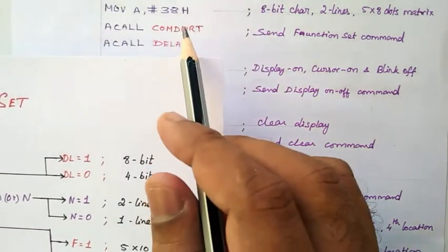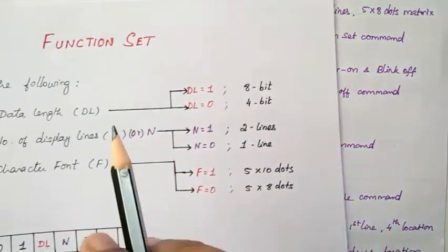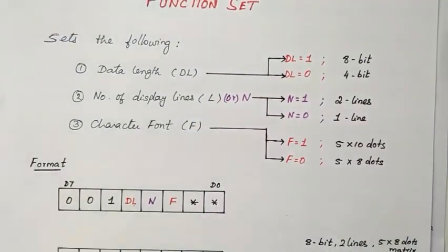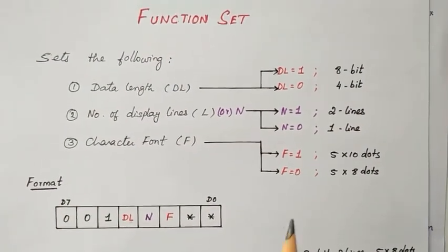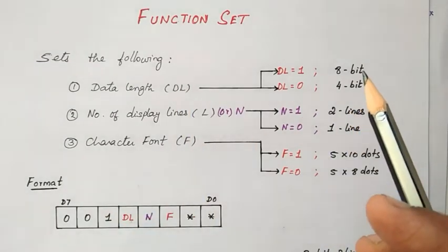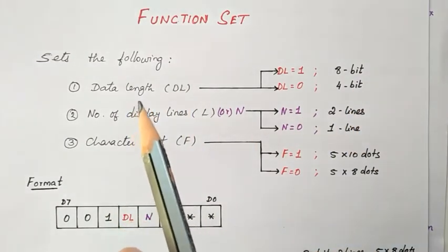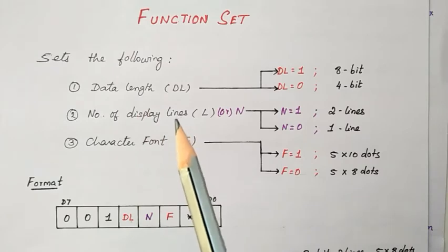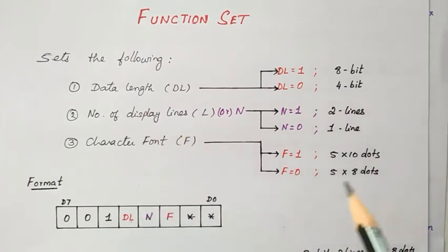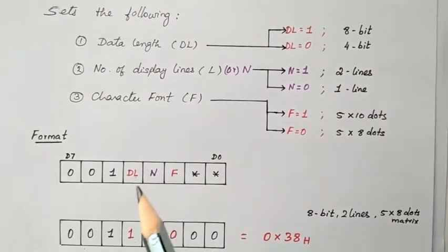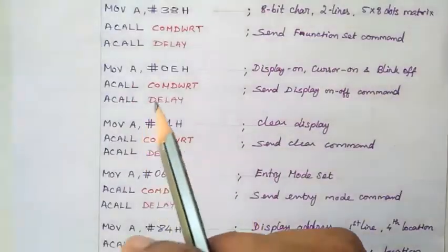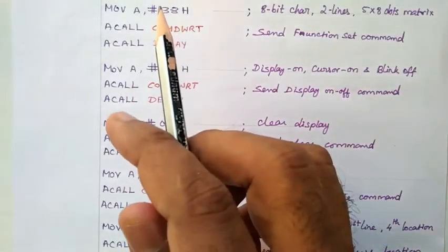Now we see how we get 0x38 — it is the function set code. In the function set, we declare the data length, how many lines we are going to display, and what type of font. By putting the appropriate values, we get 0x38. This value is presented in the initialization code.